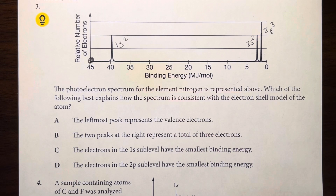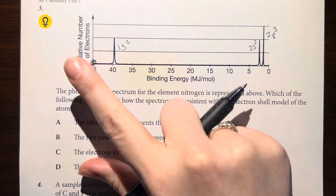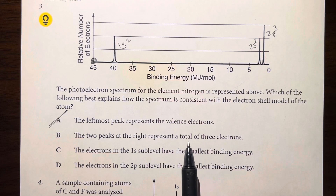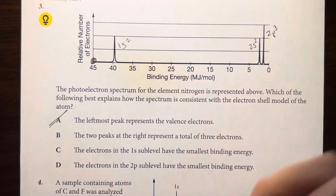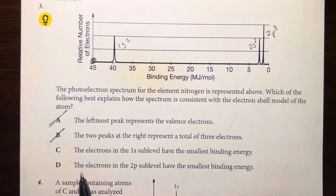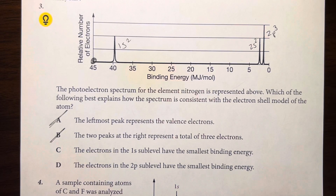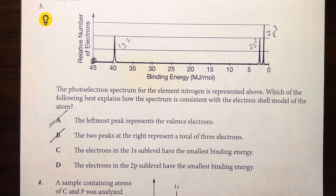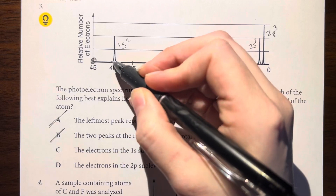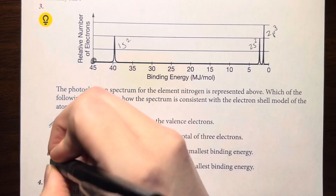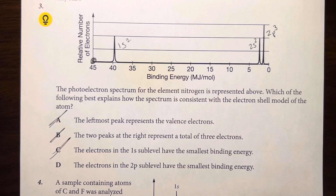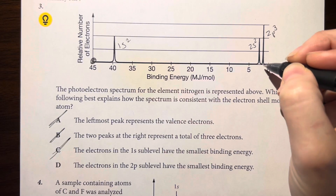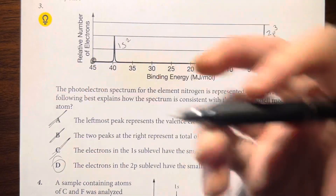Option A: the leftmost peak represents valence electrons — that's exactly the opposite. My nucleus is in the bottom left, and my valence electrons are far to the right. Option B: the 2 peaks at the right represent a total of 3 electrons — no, I have 2 and 3, so 5 electrons. Option C: the 1s subshell has the smallest binding energy — no, the x-axis is reversed and the 1s electrons closest to the nucleus have the highest binding energy. Option D: the 2p sublevel has the smallest binding energy, and we see 2p is closest to zero binding energy. That is our best answer.